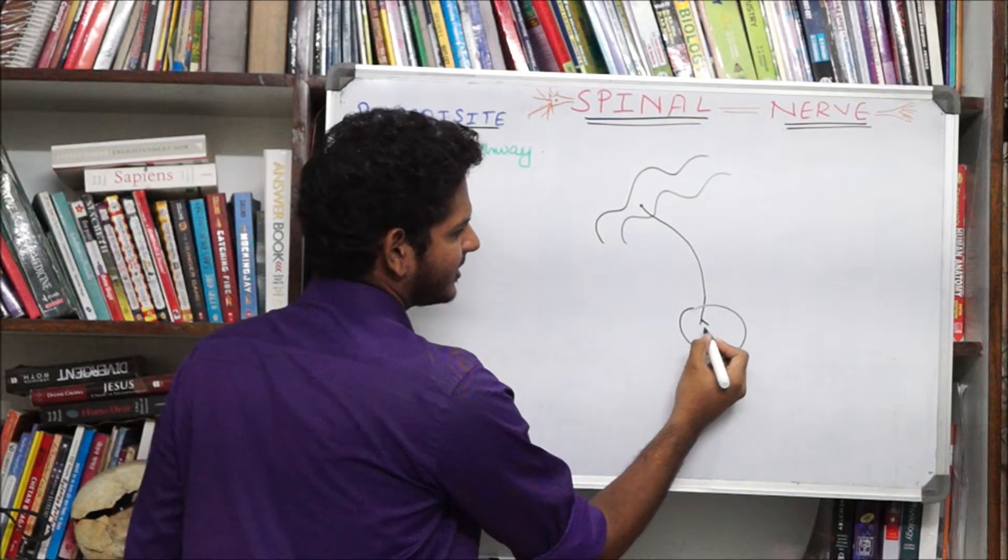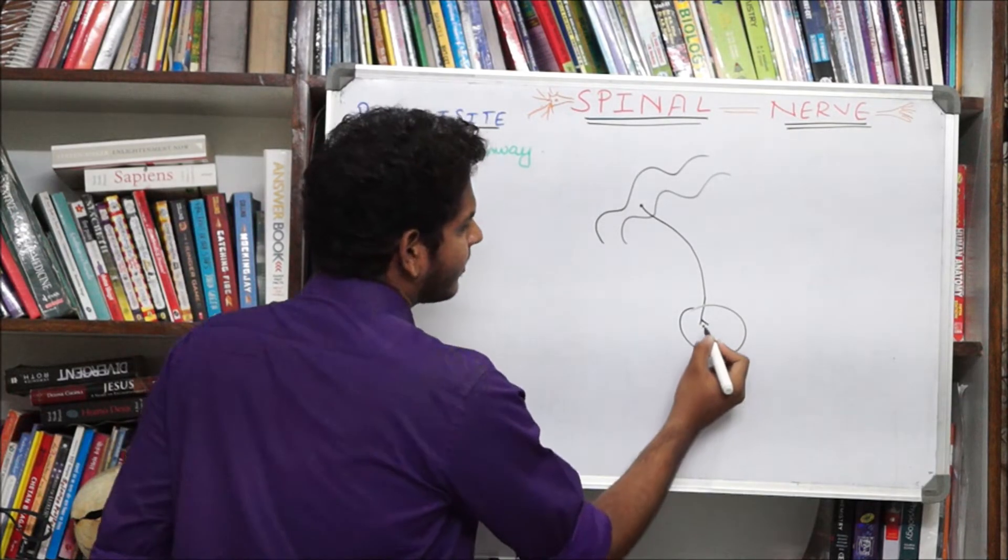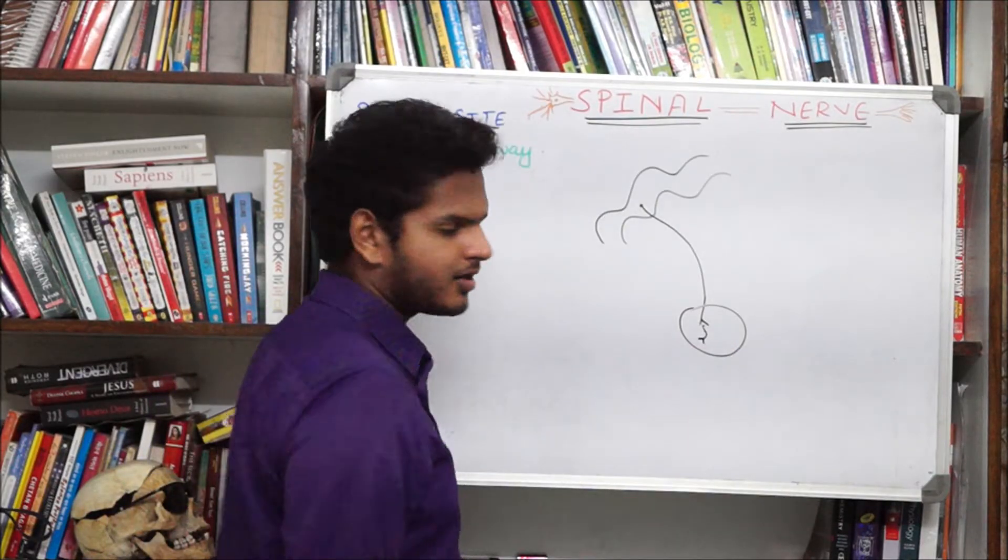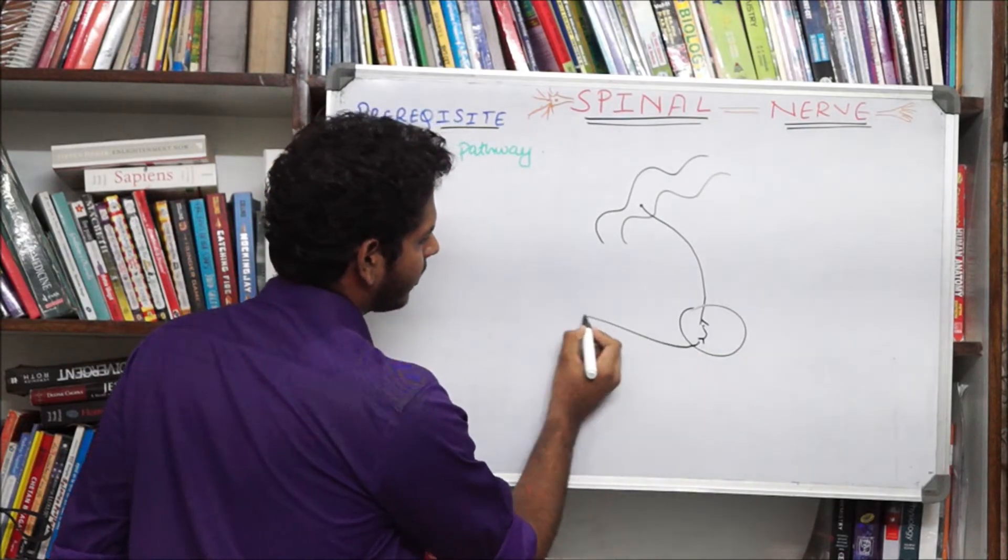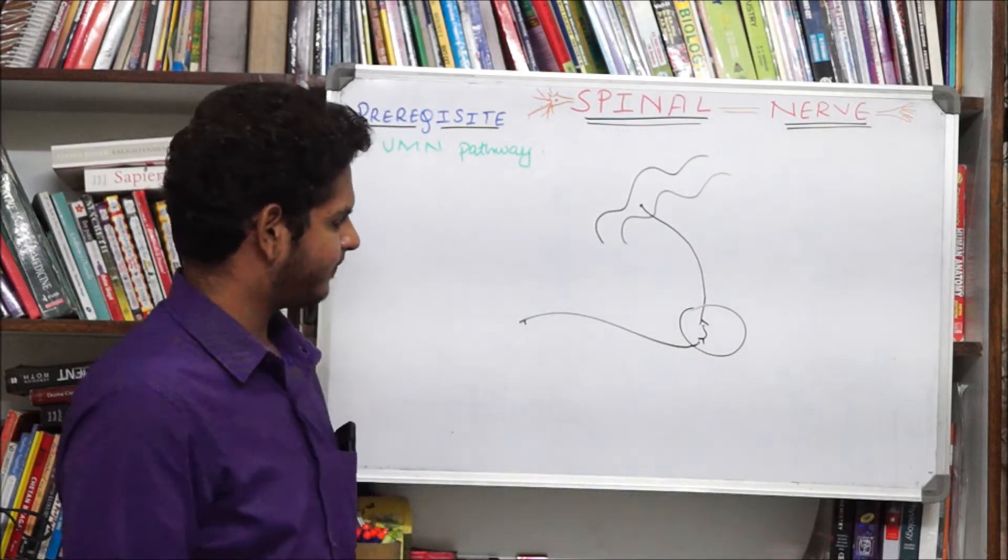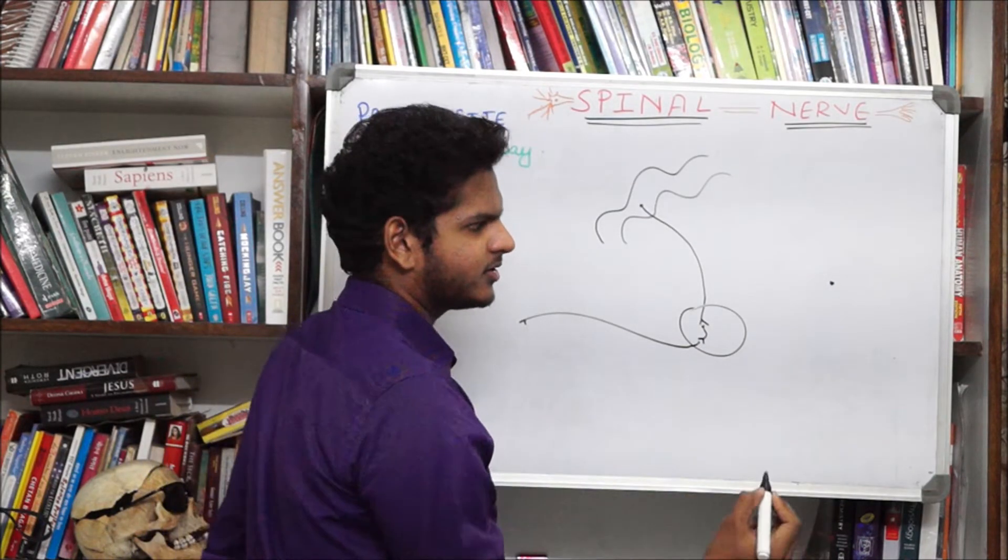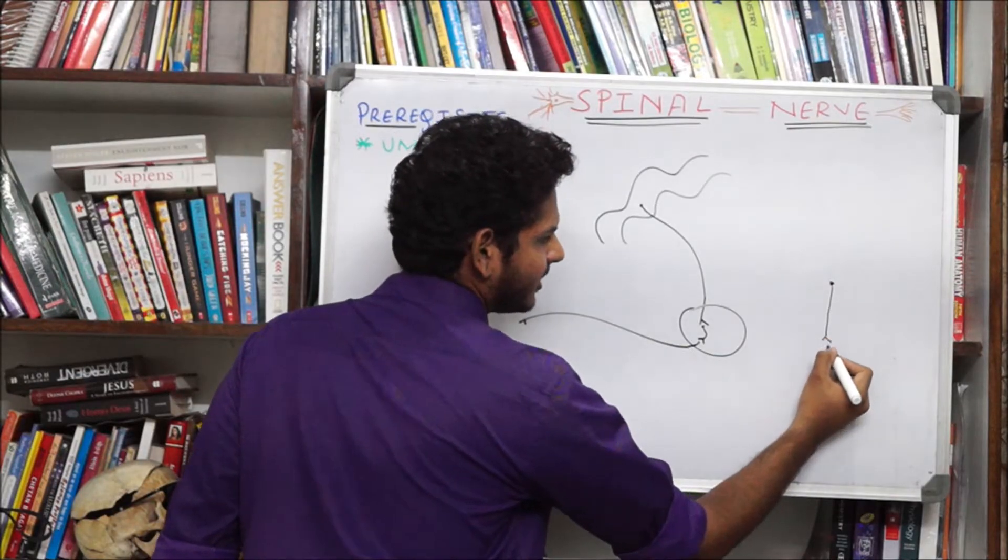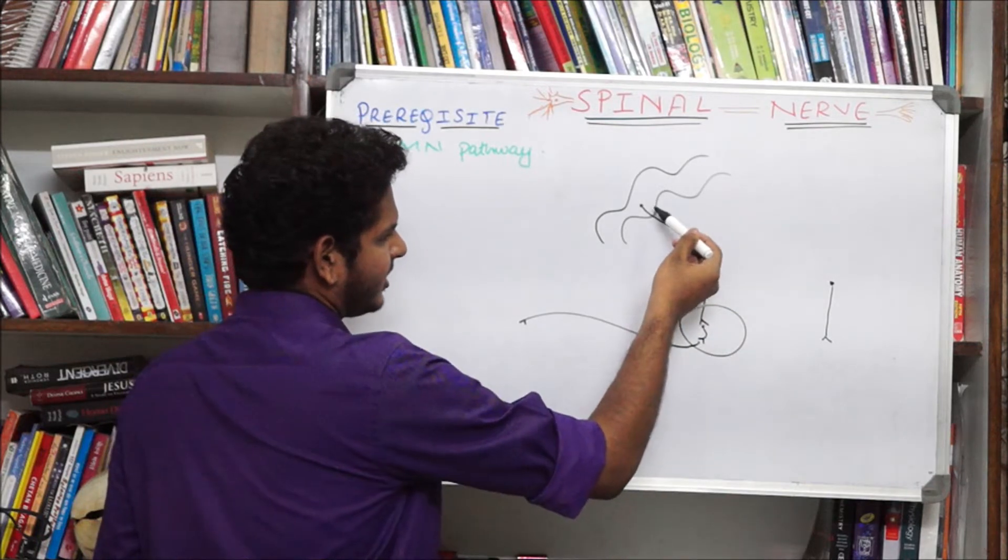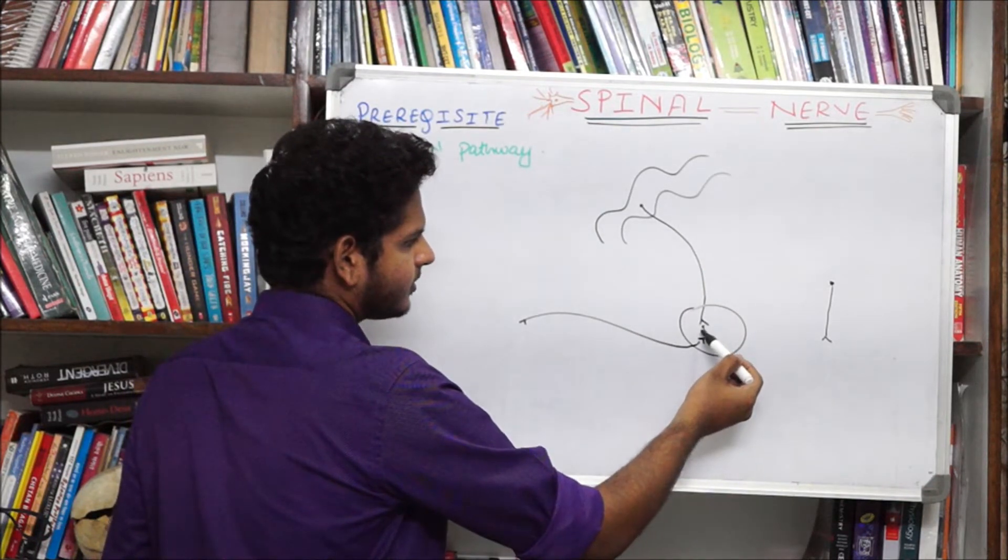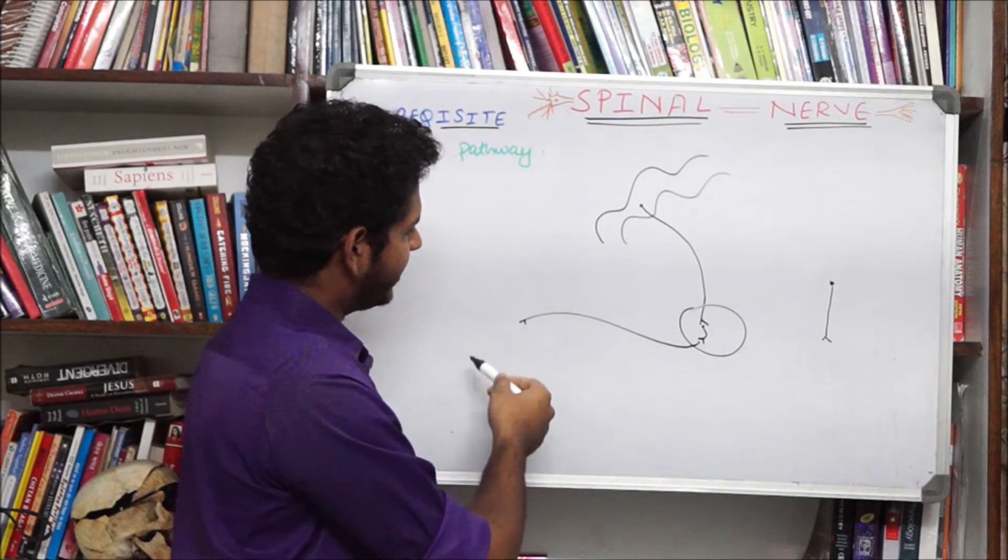In the spinal cord what happens is that most of the times, another neuron is present in the grey matter which gives off a signal which is connected to another neuron and the another neuron goes to the effector organ. So what is happening is that the brain is communicating with the spinal cord via interneurons or not and finally giving the signal what action has to be executed.